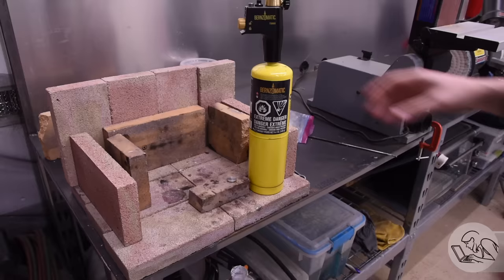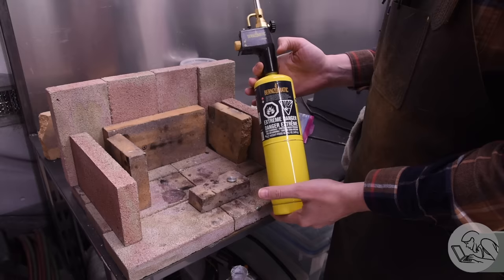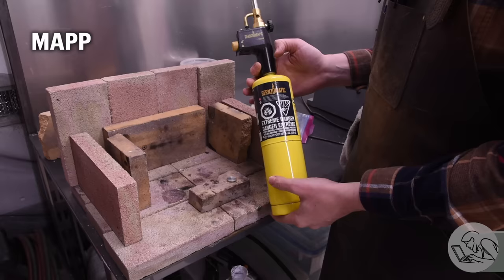All right, time for heat. Let's talk torches. I'm going to be using this guy. This is a standard hardware store yellow torch. Now, people call these MAP gas. They're not actually MAP gas. Real MAP gas hasn't been manufactured, at least in North America, since 2008.